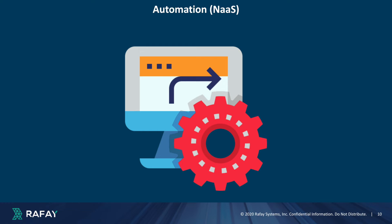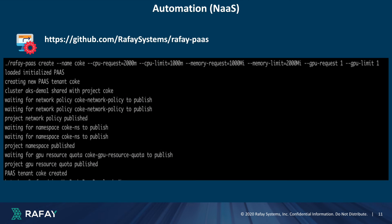An essential capability of the Rafay platform is its support for multiple user interfaces. While we've demonstrated creating Namespace as a Service using the UI, these operations can also be automated using APIs. For instance, we've encapsulated these steps into a CLI tool, enabling automation by accepting parameters for the seamless provisioning of Namespace as a Service.